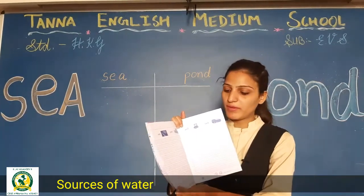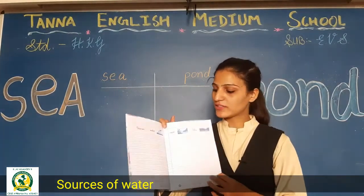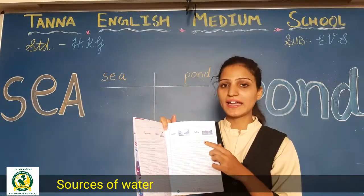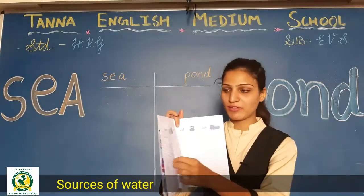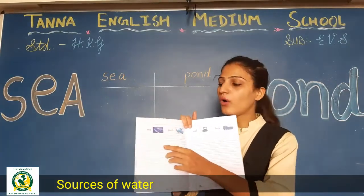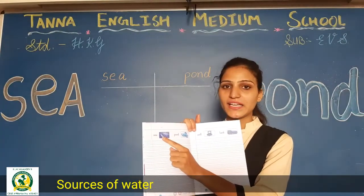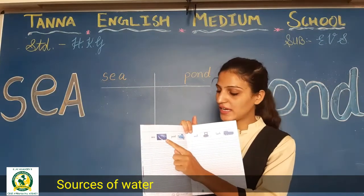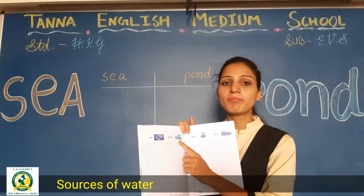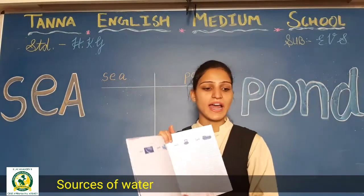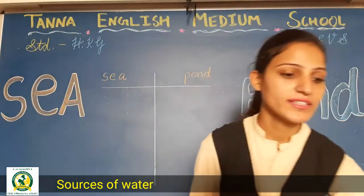उसमें हमने पहले क्या किया था? Sources of water में river and lake — वहाँ से हमें water मिलता है. और कहाँ से मिलता है? Sea — S-E-A — and pond, P-O-N-D. तालाब. Okay?